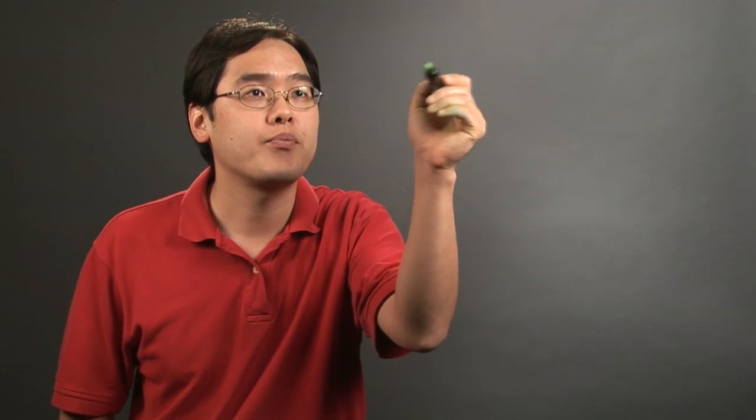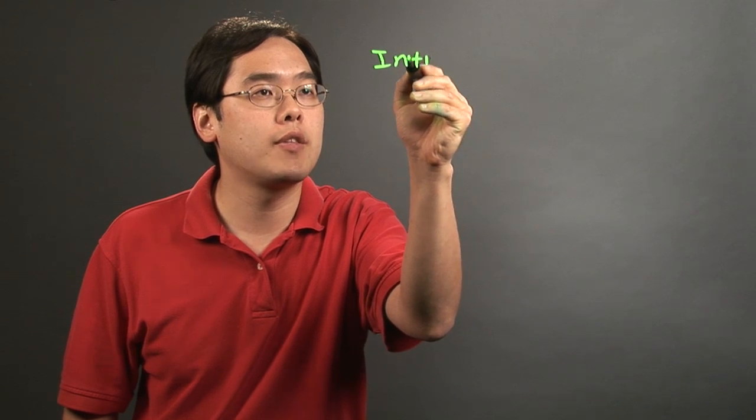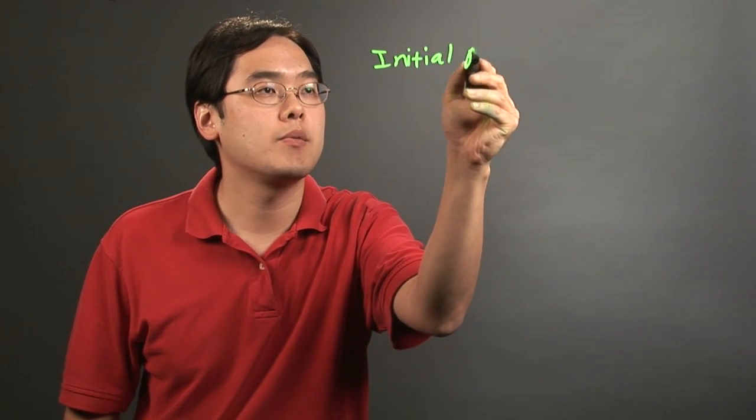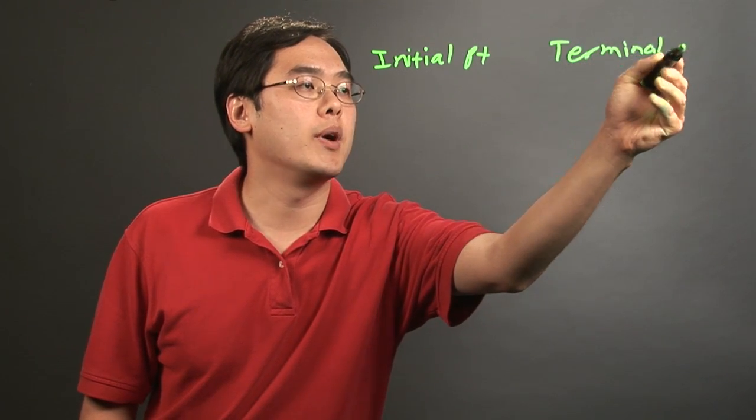But to use trigonometry to calculate a vector, it actually goes back to a very important definition. Now first, let's talk about the basics of it. You start generally with two points, an initial point and a terminal point.